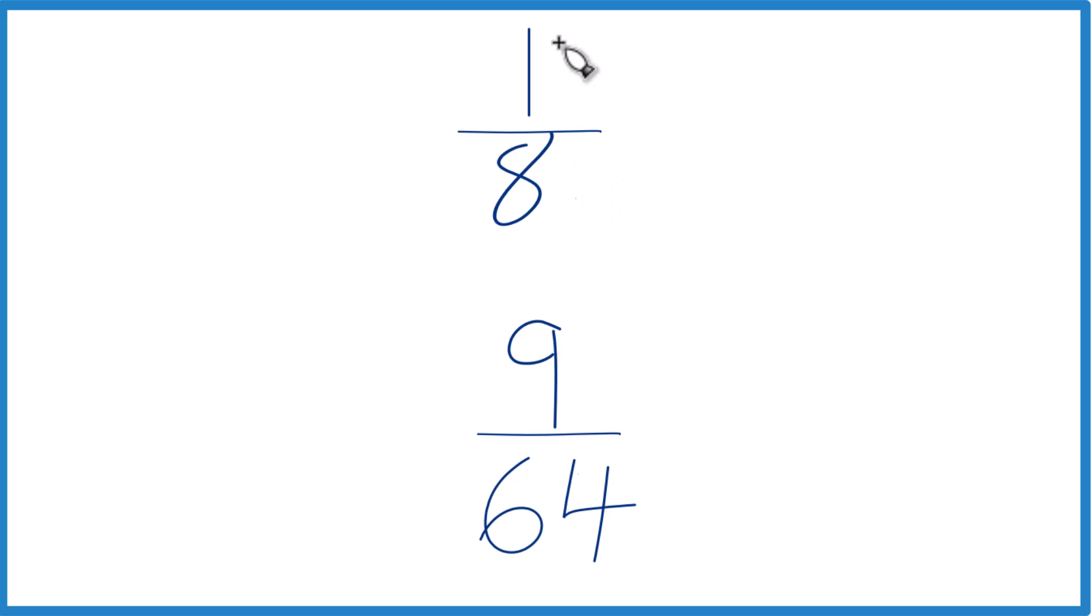One, you could just take a calculator, divide 1 by 8, get a decimal, divide 9 by 64, get a decimal, and just compare the decimals. Whichever one's greater, that's the greater fraction.